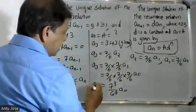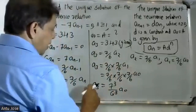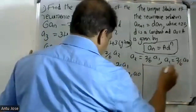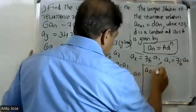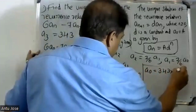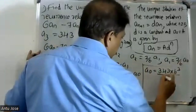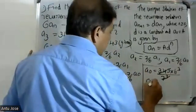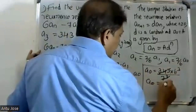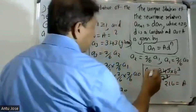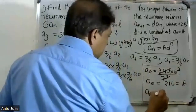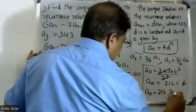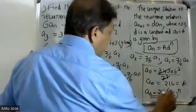That is 7 cube over 6 cube, so 343 into 6 cube divided by 7 cube. Since 7 cube equals 343, canceling 343, therefore a0 has the value — that is 6 cube.